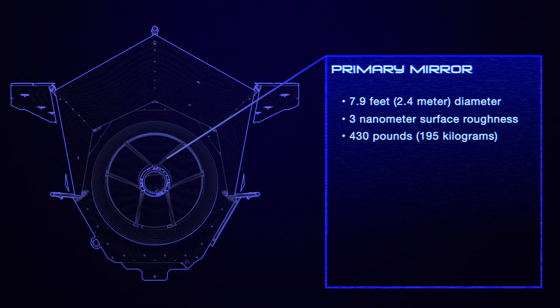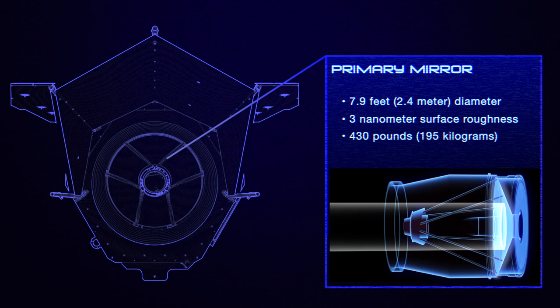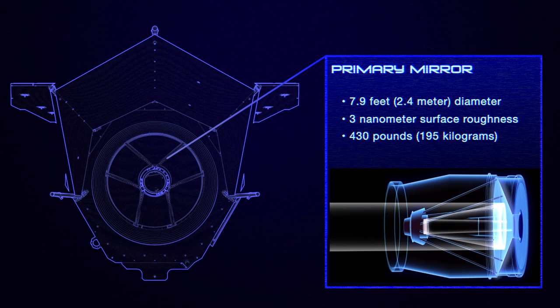This is where Roman is closest to Hubble. It has the same size and type of main mirror, a 2.4-meter precisely shaped piece of silver-coated glass. The size of this mirror is partly how Roman matches Hubble's resolution.